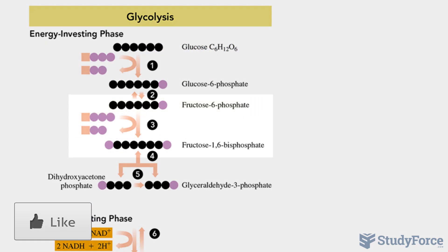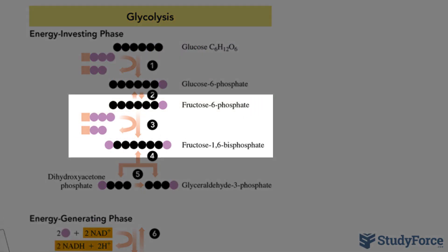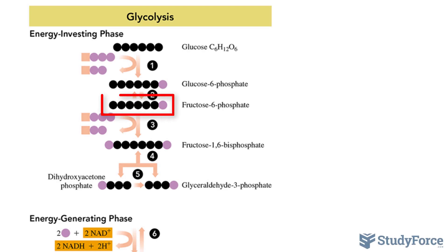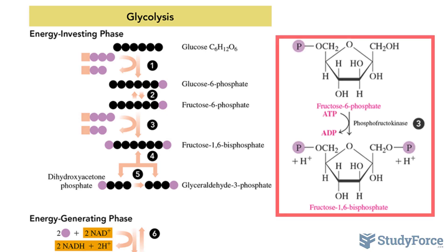In the third reaction of glycolysis, another phosphorylation reaction takes place. This time, phosphate from ATP is transferred to fructose 6-phosphate, producing fructose 1,6-bisphosphate. As the name suggests, this molecule contains two phosphate groups. A second kinase enzyme called phosphofructokinase catalyzes this step through hydrolysis.